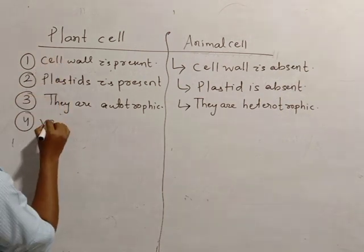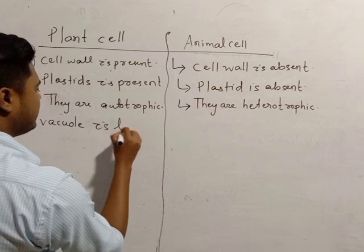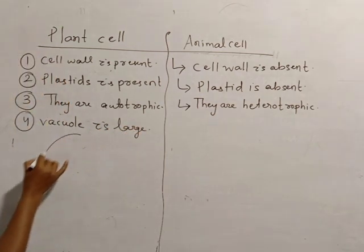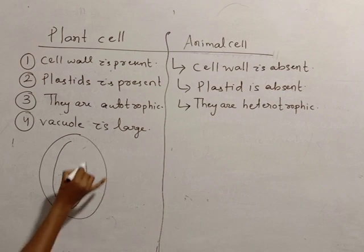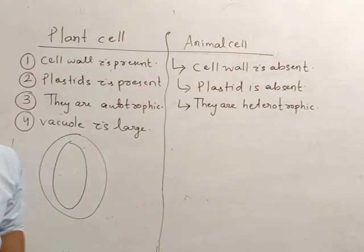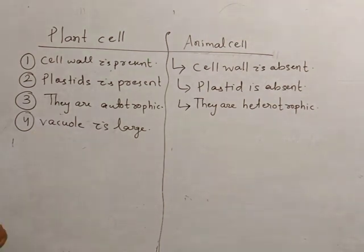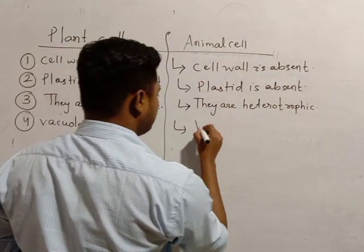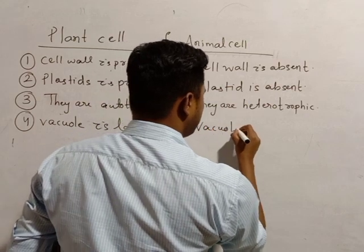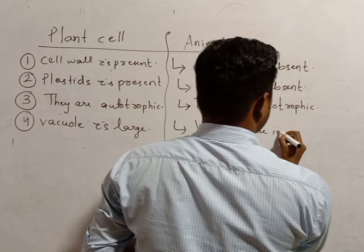Fourth point - plant cells have vacuoles that are large. A single cell may have a vacuole that occupies 70% of the space. The vacuole can be very large in plant cells. Vacuoles are also present in animal cells, but vacuoles here are smaller in size.